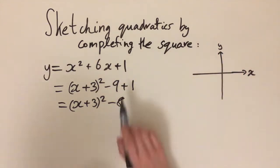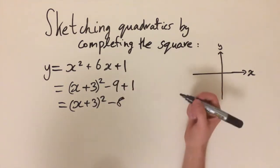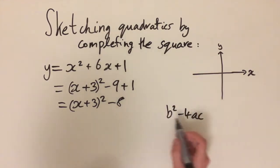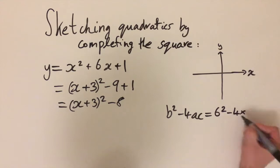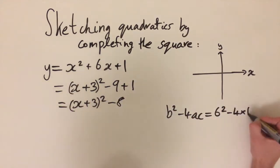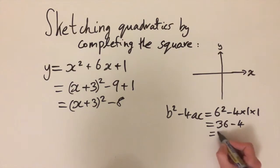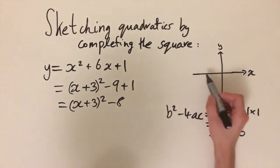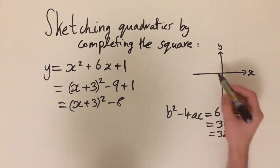Next, we can look at the discriminant — this will tell us how many solutions we have. Writing b² − 4ac: b is 6, so that's 6² minus 4 times a (which is 1) times c (which is also 1). This simplifies to 36 − 4, which is 32, and that is positive. So the discriminant is positive, which tells us we have two places of intersection with the x-axis.